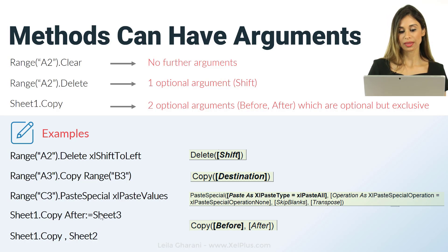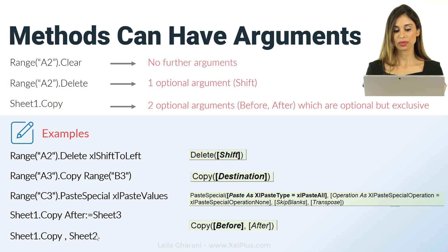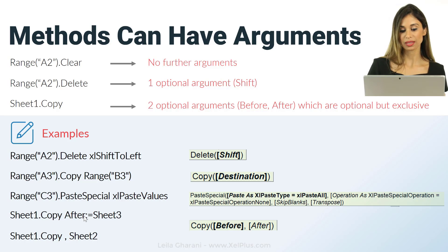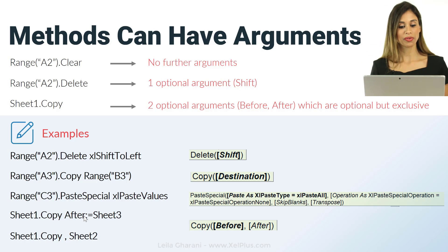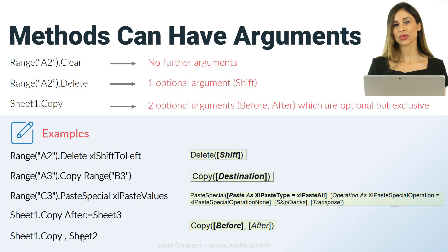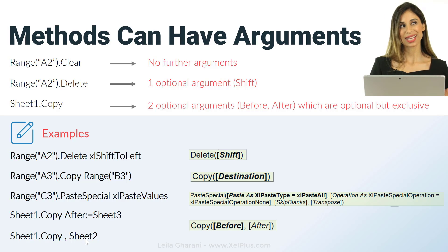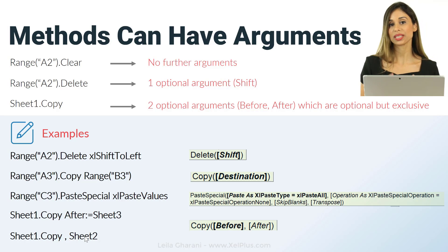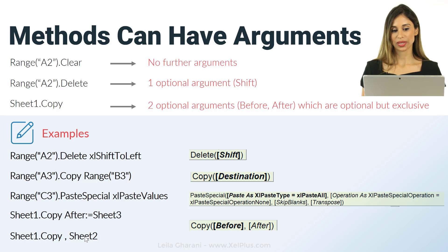It's up to you which method you want to use when writing your VBA code. Some people prefer naming arguments because it's clear what you're referring to, and some people prefer the comma-separated style. I use a mix of both, though most of the time I go with the comma-separated style since I'm used to Excel formulas. Just pick the method you feel most comfortable with.